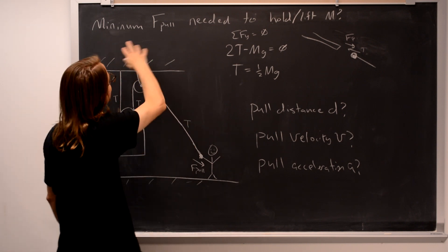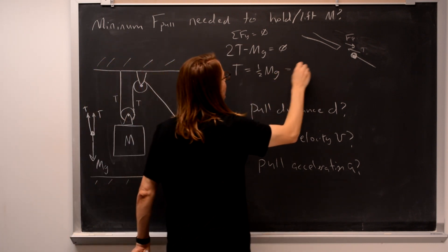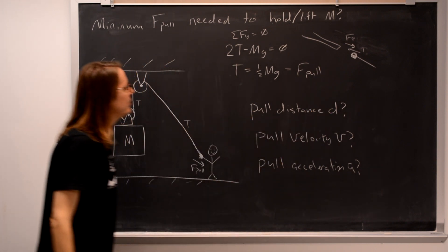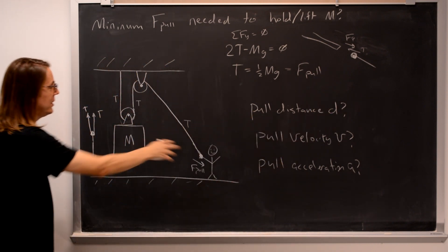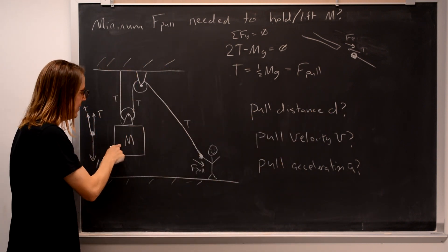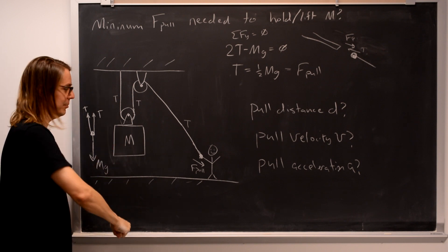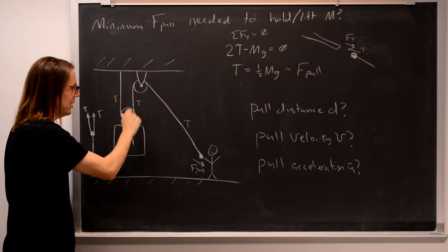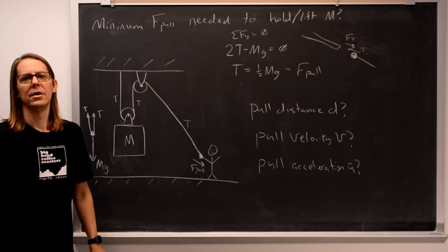So then really, what force F pull is needed, it's equal to this. It takes half the weight. So that's what this setup does, is it makes it easier to lift the mass. Instead of having to pick up the entire weight, you set up something like this, and you have to pull with half the weight.